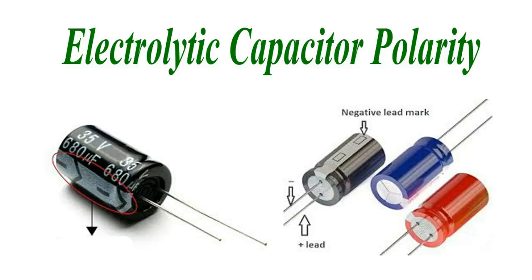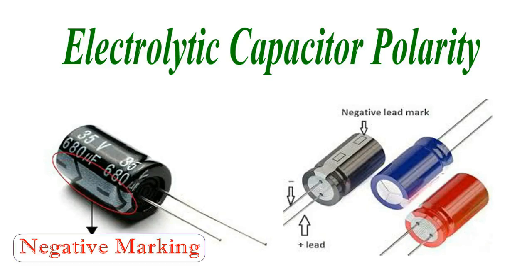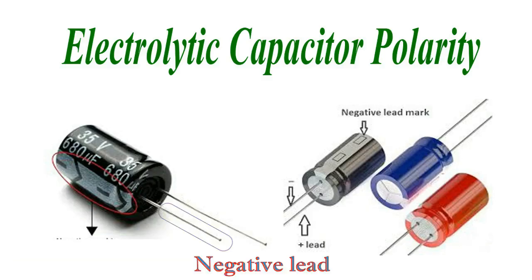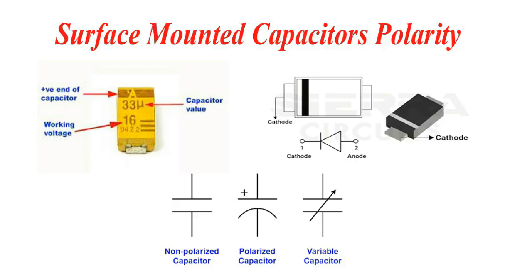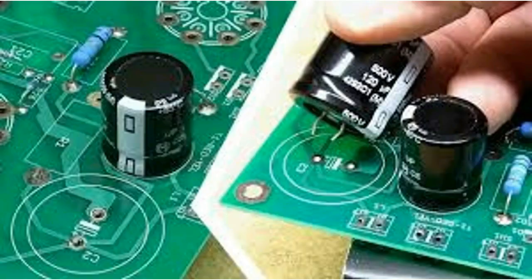You can identify the polarity of the capacitor by looking for physical markings like a negative sign, a strip, or a colored band, which usually indicate the negative terminal for most electrolytic capacitors. For leaded capacitors, the shorter lead is often the negative terminal, while for surface-mounted types, a colored band or strip often marks the negative side. Look for a positive sign to confirm the positive terminal.